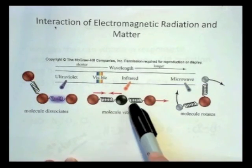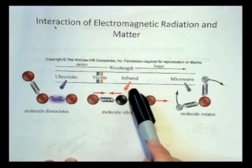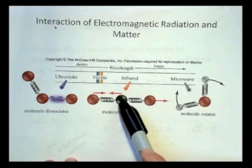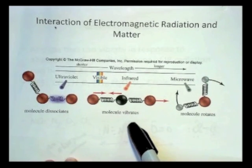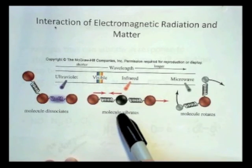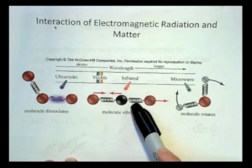The molecule doesn't break down, it just causes an increased vibration. Then the molecule is going to relax back down to its normal vibrational mode and re-emit that infrared radiation. So that's how we trap heat.